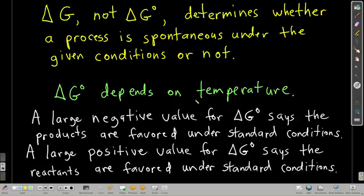These delta Gs certainly depend upon temperature. When you calculate delta G zero, if you get a large negative value, like we did for the combustion of methane, that tells you that the products are favored under standard conditions. And if it's a large positive value, then the reactants are favored under standard conditions. If you get a large positive delta G zero for a reaction, that means that if you reverse the reaction, that direction, the opposite direction, will be spontaneous under the standard conditions.